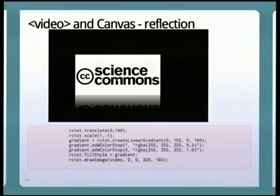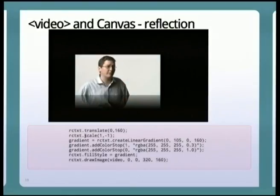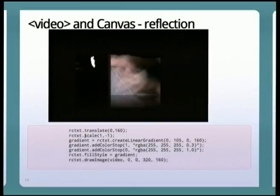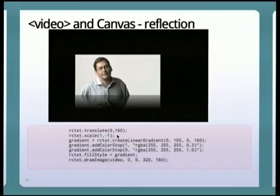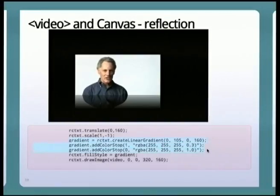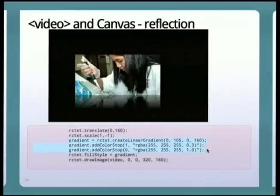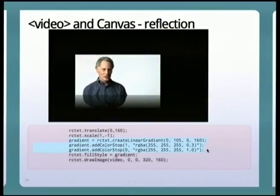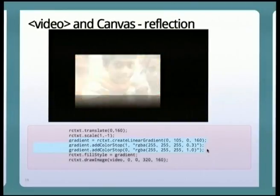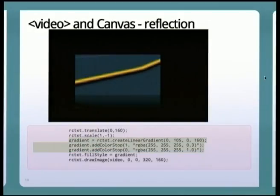You can do similar things with a reflection. Here we take the image, move it 160 pixels down — below the video — making a copy of the image, then turn it around, scale it, and flip it so it's now a mirror image. All we need to do is put a gradient over this mirrored image, and this way we have a reflection. That's actually the only sane way I found to do reflections, because if you try to do reflections in CSS you'd have two video elements and it's almost impossible to keep them in sync. Here we only deal with one video.